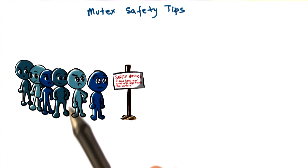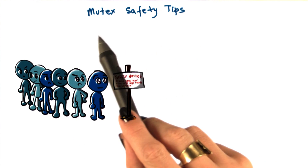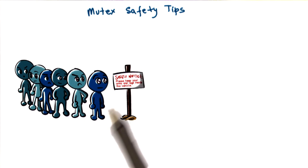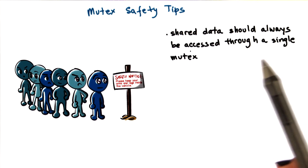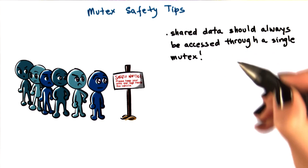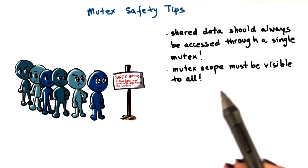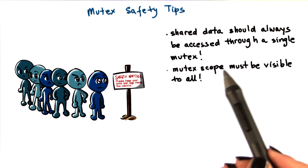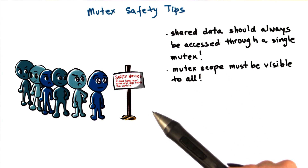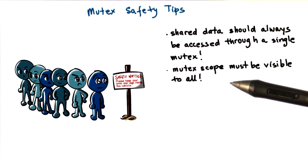In the previous lesson, we mentioned a number of common pitfalls when writing multithreaded programs. A few worth mentioning in the context of pthread mutexes: shared data should always be accessed through a single mutex — this is such a frequent error that it's worth reiterating. Next, the mutex scope must be visible to all threads. A mutex cannot be defined as a private variable to a single thread, including main. You must declare all of your mutexes as global variables.